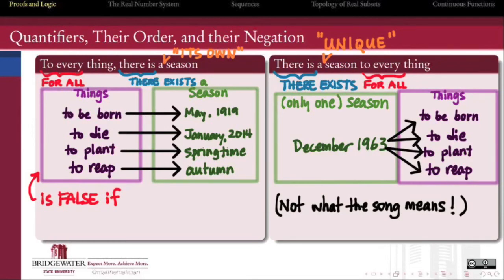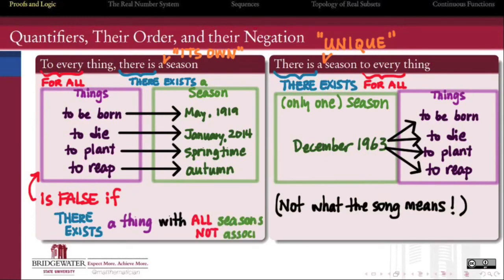We would need to find a thing, even just a single thing, for which there is no season at all associated with it. That reverses the leading for all into a there exists, and the trailing there exists into a for all.